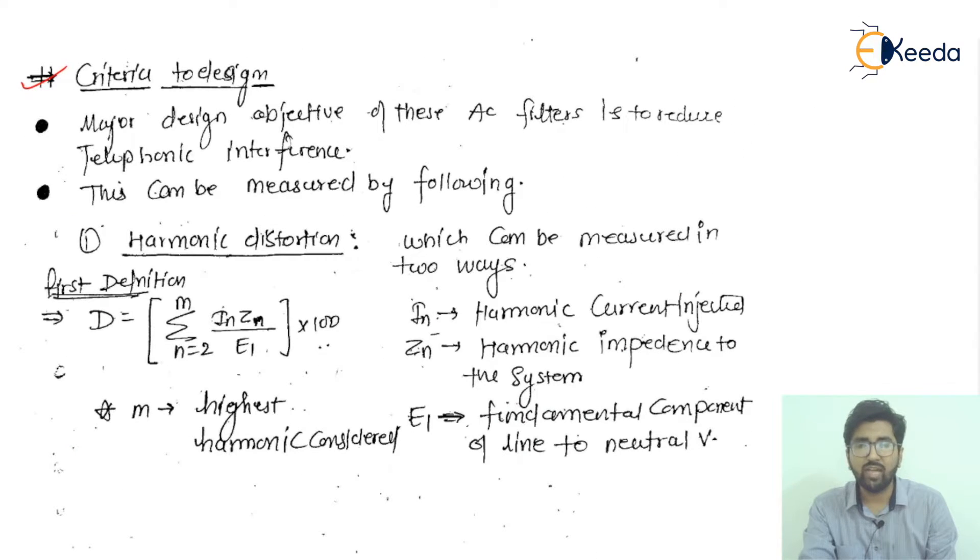Now I'll move to the criteria to design. The major design objective of AC filters is to reduce telephonic interference. If we are interested in designing AC filters, the major objective is telephonic interference, which has to be reduced because it disturbs communications in telephonic lines. This can be measured by the following methods.